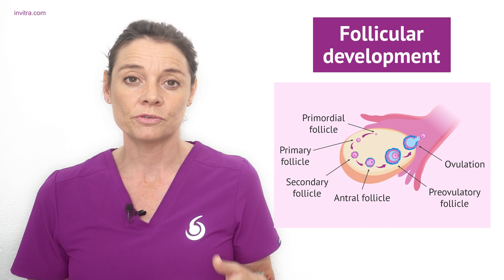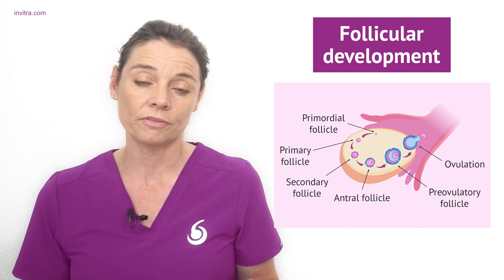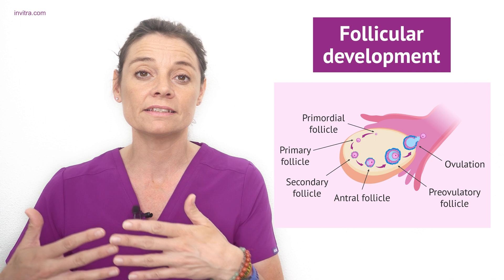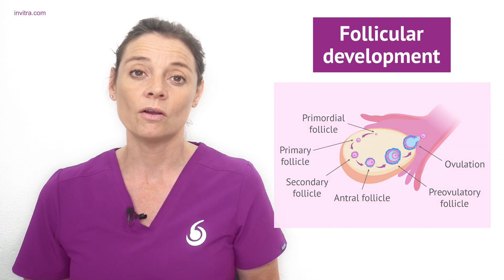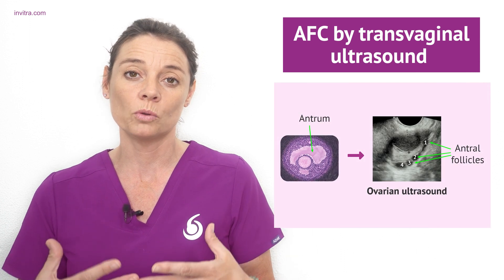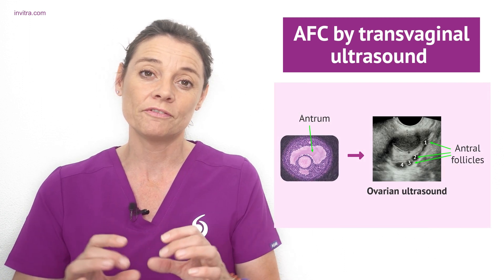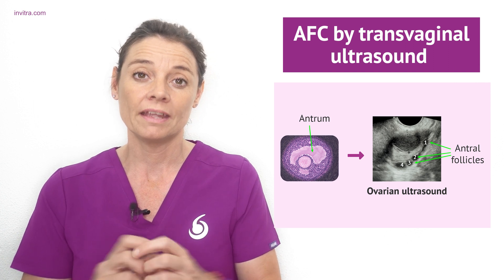From these antral follicles, only one will develop each month to then release the mature egg in ovulation. Antral follicles are characterised by having something in them called an antrum, and this is a fluid-filled cavity within the antral follicle.